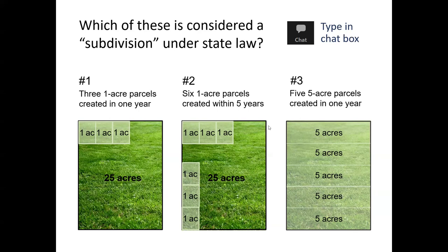Option two: let's say we create six one acre parcels and we create that within a period of five years. And then the third option: let's say we completely divide our 25 acres — we create five five-acre parcels all in one year.